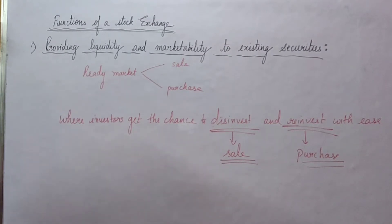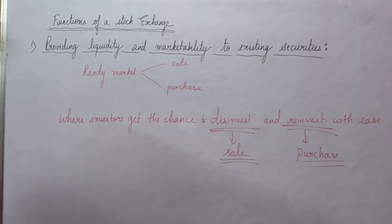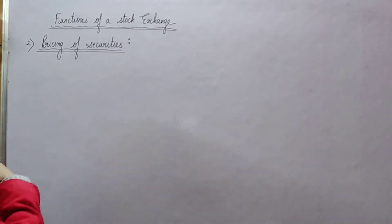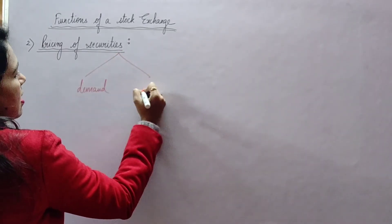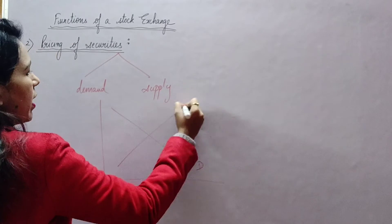The market provides liquidity and easy marketability because the investment of investors can be converted into cash whenever they want — when they need cash at any time. So there is a lot of liquidity in this market with easy sale and purchase of securities. Now the next function: in the financial market, how is the price of a security determined? Through the forces of demand and supply.